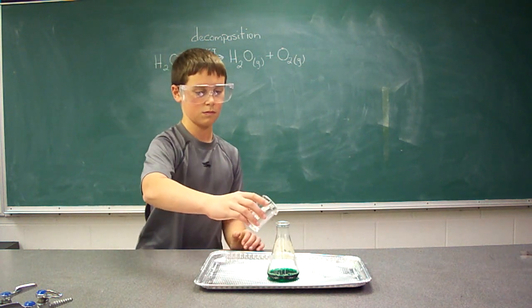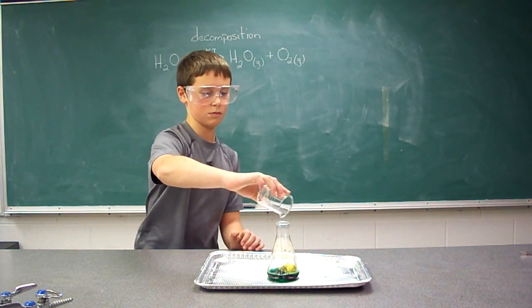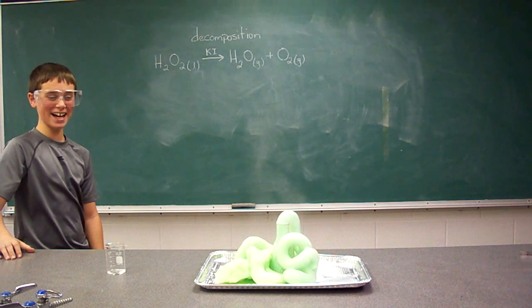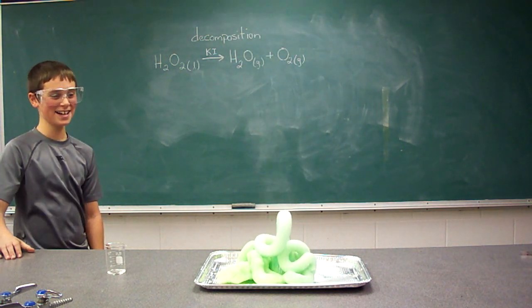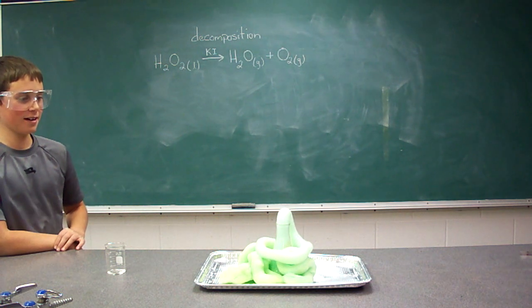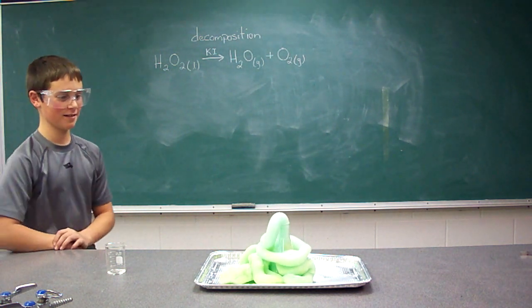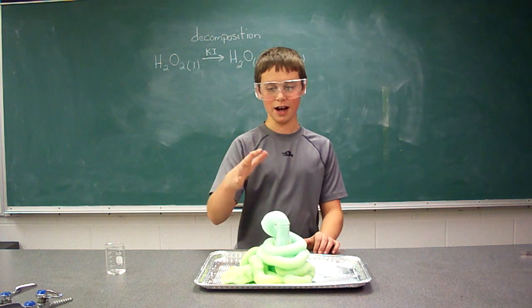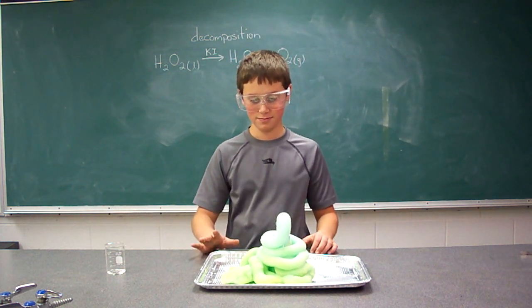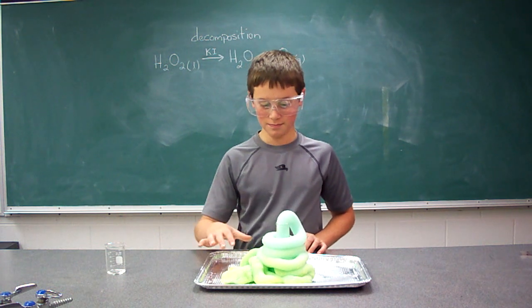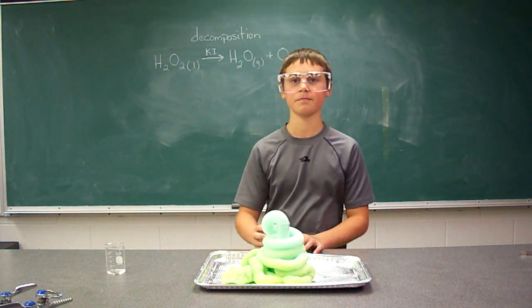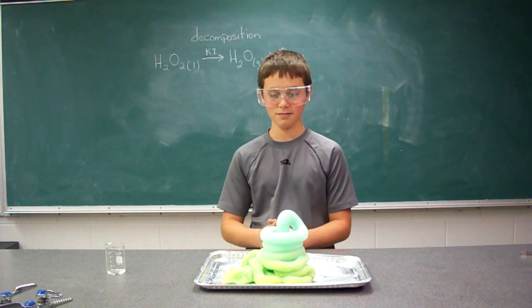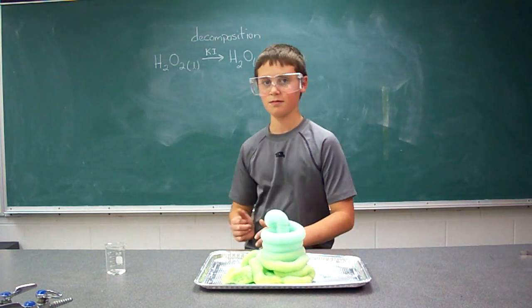We're going to go ahead and add that potassium iodide and break down our hydrogen peroxide. You can see the water vapor being given off — it looks like steam. Zachary, go ahead and put your hand over that. What's it feel like? It's hot — pretty warm. So it's also an exothermic reaction, giving off heat as this decomposition occurs. Thanks for joining us in chemistry class — hope this helped you identify different types of chemical reactions.